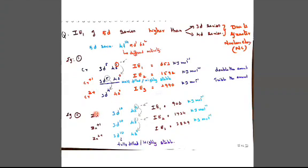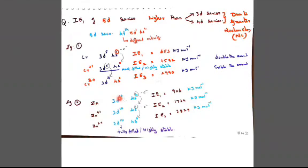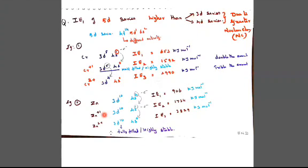Now consider zinc with configuration 3D¹⁰ 4S². Losing one electron gives the ionization energy of 906 kilojoule per mole. Removing one more electron is double the amount. Then the next electron should be removed from a half-filled state, which is very, very difficult. So the third ionization energy of zinc is very, very much greater than the first and second. These examples are all from the 3D series. In the next class, we will see the 4D and 5D series.